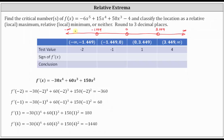Starting with the domain of all real numbers, we plot the critical numbers as open points on the number line. This gives us four subintervals: the open interval from negative infinity to negative 1.449, from negative 1.449 to zero, from zero to 3.449, and from 3.449 to infinity. We pick test values: negative 2 in the first, negative 1 in the second, positive 1 in the third, and positive 4 in the fourth. Then we determine the sign of the first derivative at each test value.